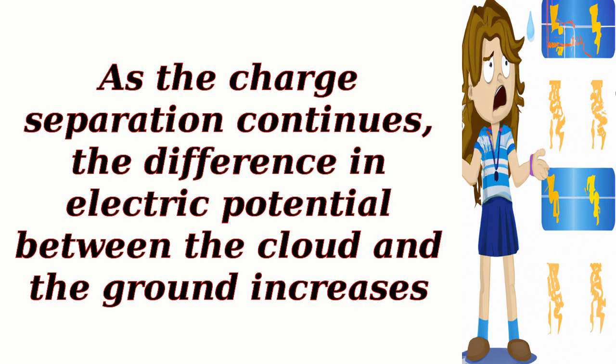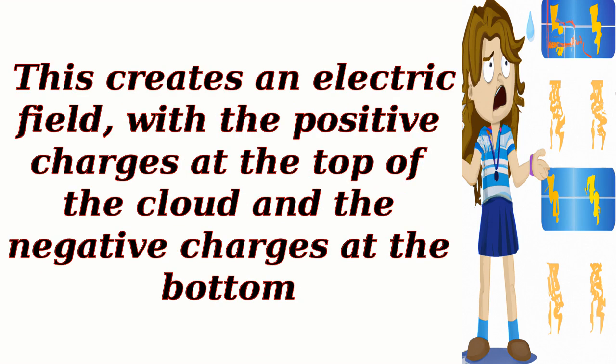As the charge separation continues, the difference in electric potential between the cloud and the ground increases. This creates an electric field, with the positive charges at the top of the cloud and the negative charges at the bottom.